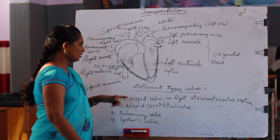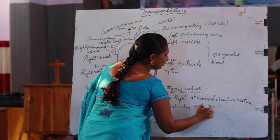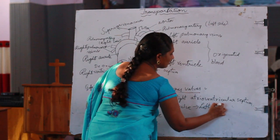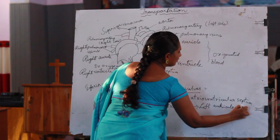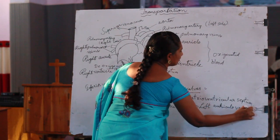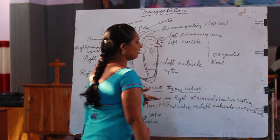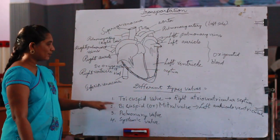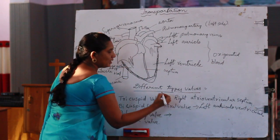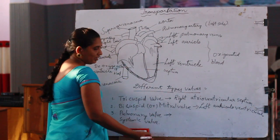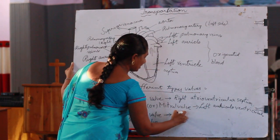The bicuspid valve, also known as the mitral valve, is present in the left atrio-ventricular septum. The pulmonary valve is present in the pulmonary artery.